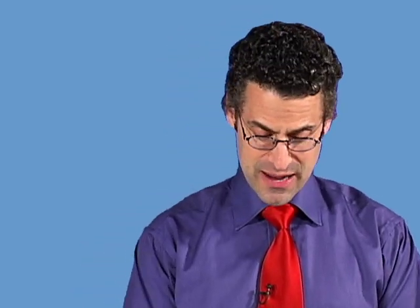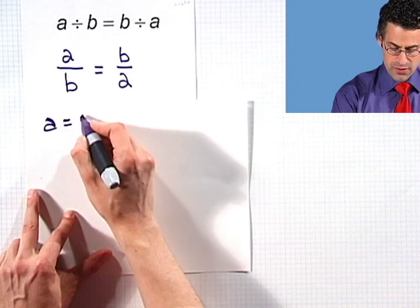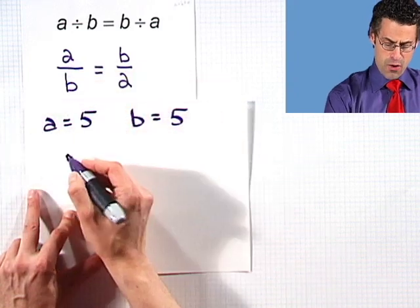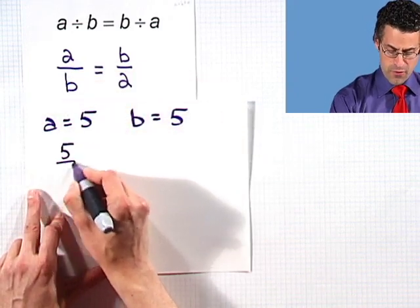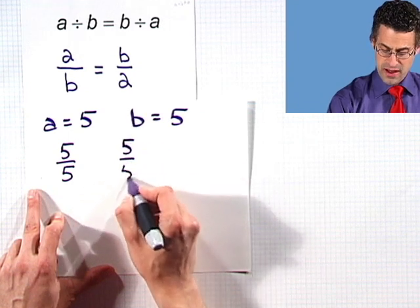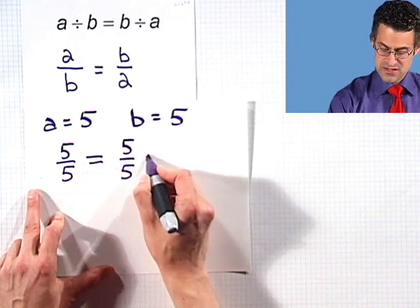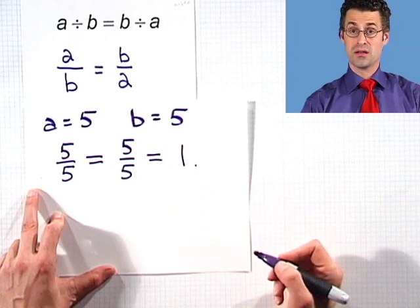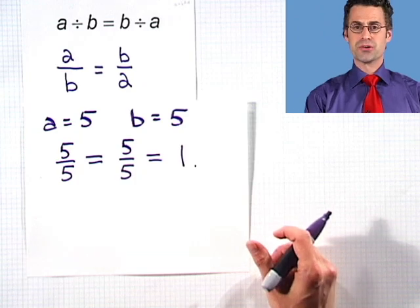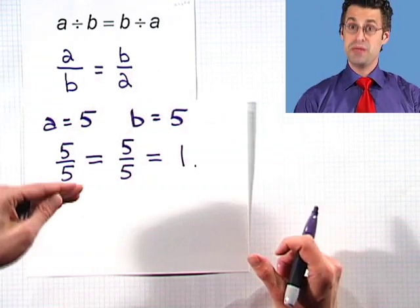But is it sometimes true? Well, actually, yes, it's sometimes true. Let me show you another example. Let's let A equal 5 and B equal 5. Then A over B is 5 over 5, and notice that's the same thing as B over A — 5 over 5. In fact, both of those quantities reduce to just the number 1. So it seems like this is sometimes true — it's true when A equals B.